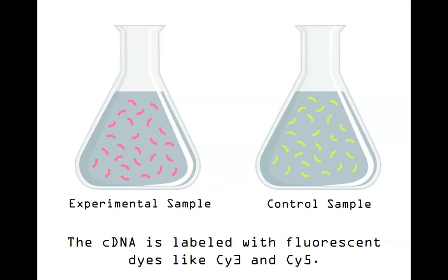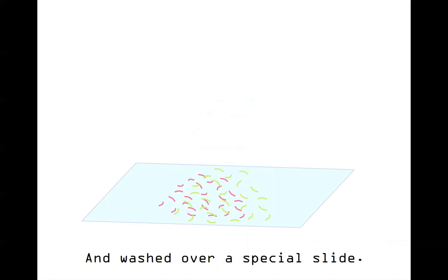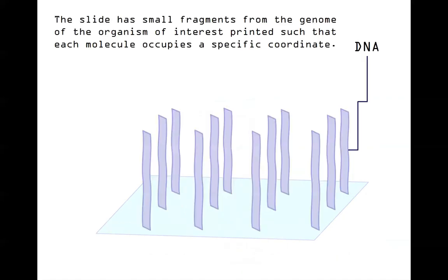So when we're ready to do the microarray, we've extracted the RNA, converted it to stable cDNA copies, and labeled them so we can tell them apart. At this point we can go ahead and just mix these together — this is one of the only times you're ever told you can just mix stuff like this. Once we have everything mixed, we wash it over a special slide. Zooming in on that slide, before we add any cDNA, it actually has tiny microscopic fragments of DNA.